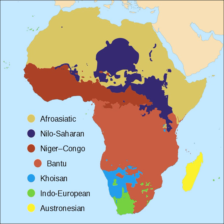There are five Khoisan families that have not been shown to be related to each other: Khoé, Tuu and Kwadi, which are found mainly in Namibia and Botswana, as well as Sandawe and Hadza of Tanzania, which are language isolates. A striking feature of Khoisan languages, and the reason they are often grouped together, is their use of click consonants. Some neighboring Bantu languages, notably Xhosa and Zulu, have clicks as well, but these were adopted from Khoisan languages. The Khoisan languages are also tonal.